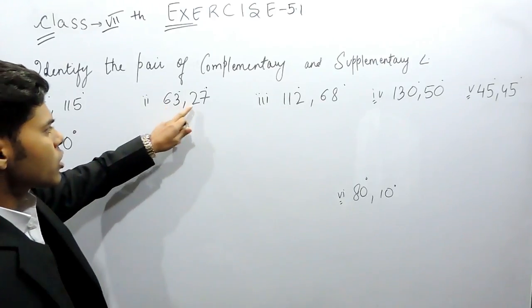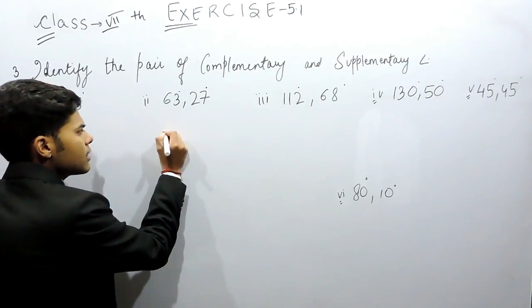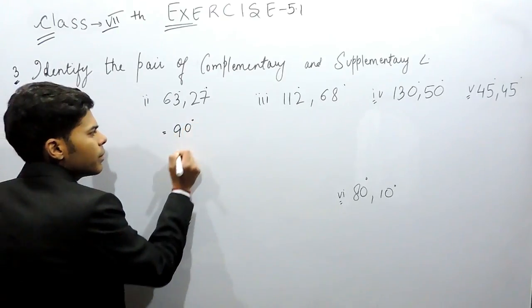This is 60 plus 20, 80, then 7 plus 3 is 10, that is 90 degrees. So it will be complementary.